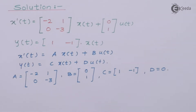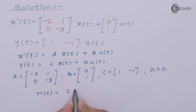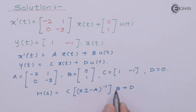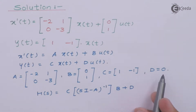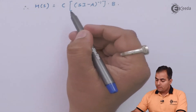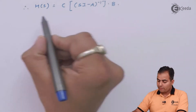Now, what is the transfer function equation? The transfer function formula is C into (sI minus A) inverse, multiplied with B, and the whole result is added with D. But here D value is 0, so H(s) equals C into (sI minus A) inverse into B only.